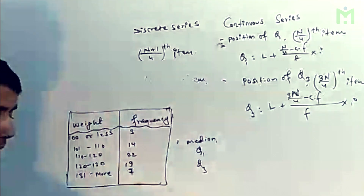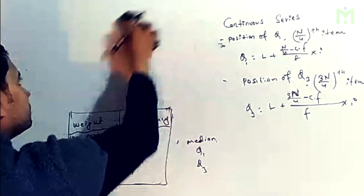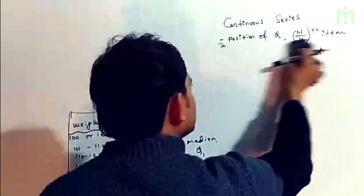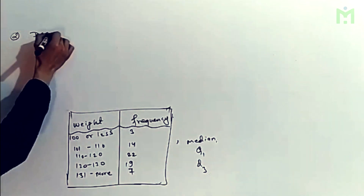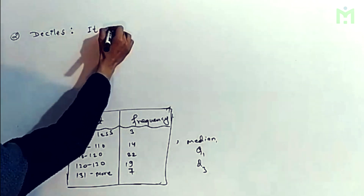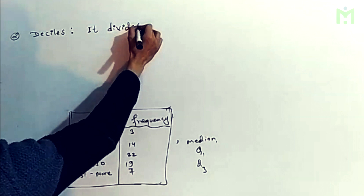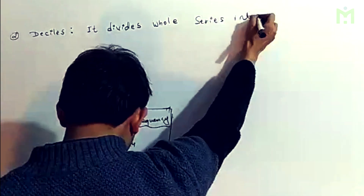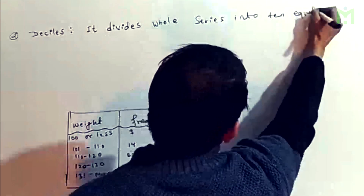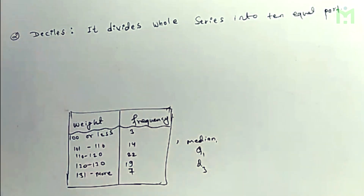What's that? Fantastic, thank you. Now, deciles. What is deciles? Deciles divide a whole field into 10 equal parts. 10 equal parts. What is deciles? 10 equal parts divide.